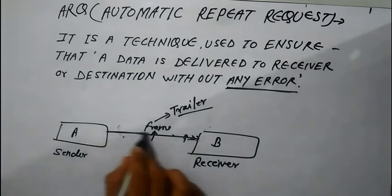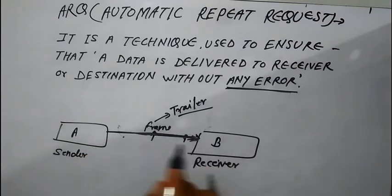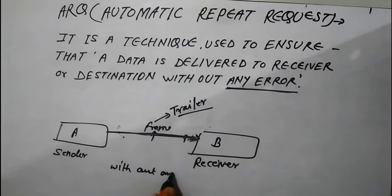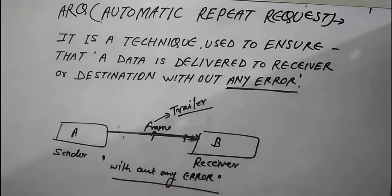That is known as ARQ — how the sender sends a frame from source to destination without any error. The main significance of ARQ is the transmission of a data frame from sender to receiver error-free, meaning how we are going to transmit data from sender to receiver without any error.